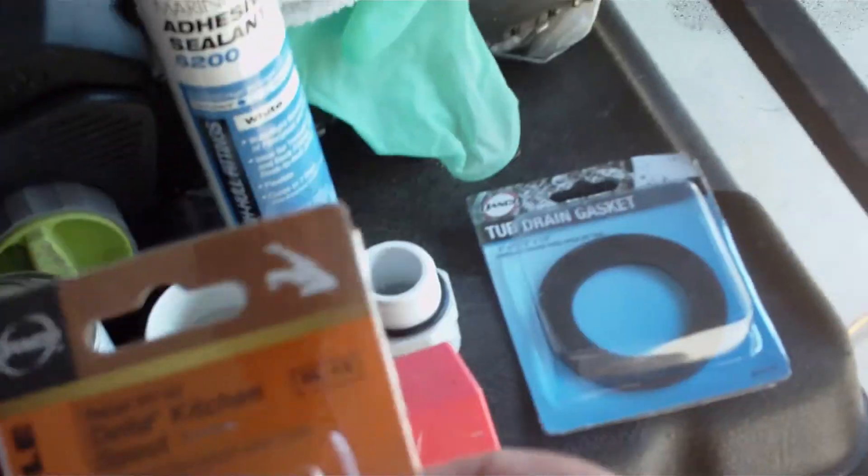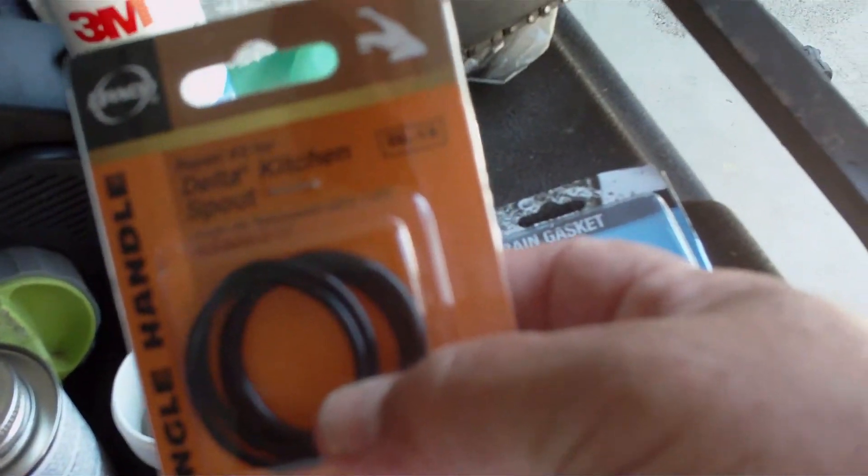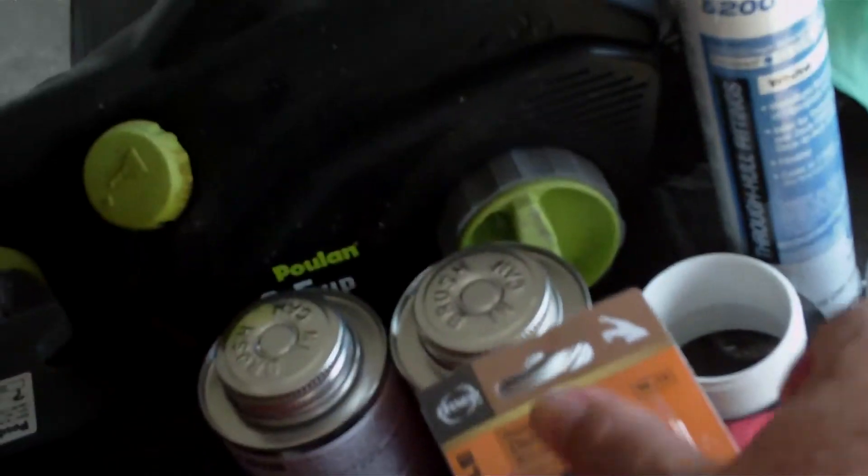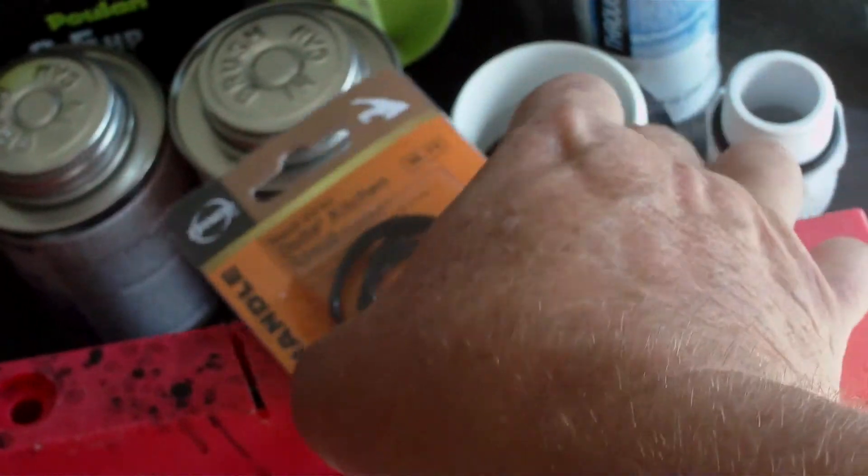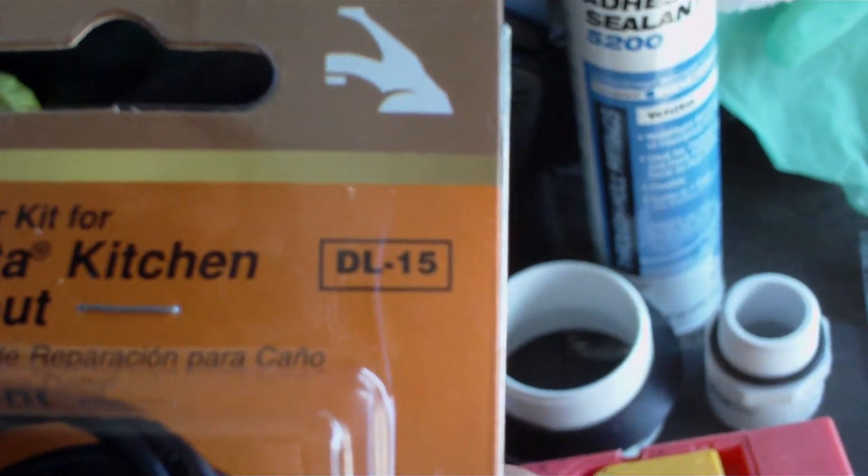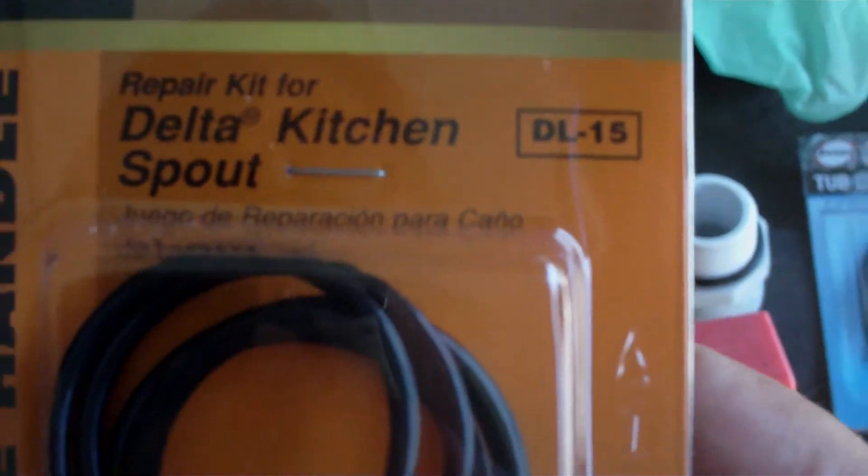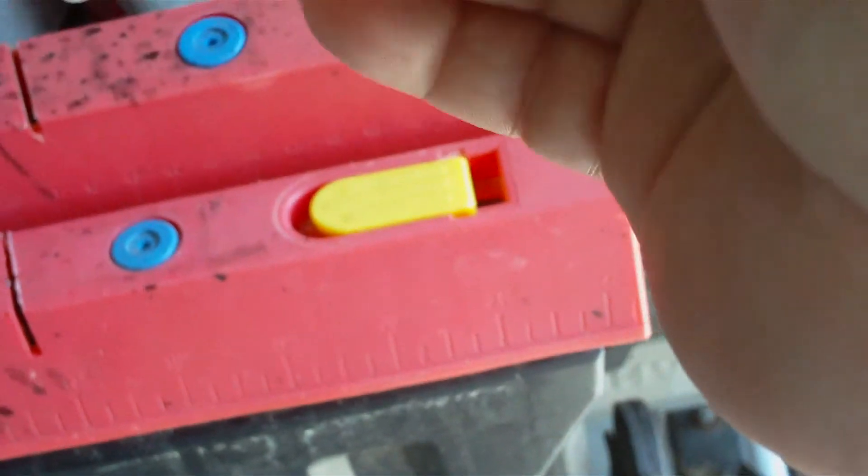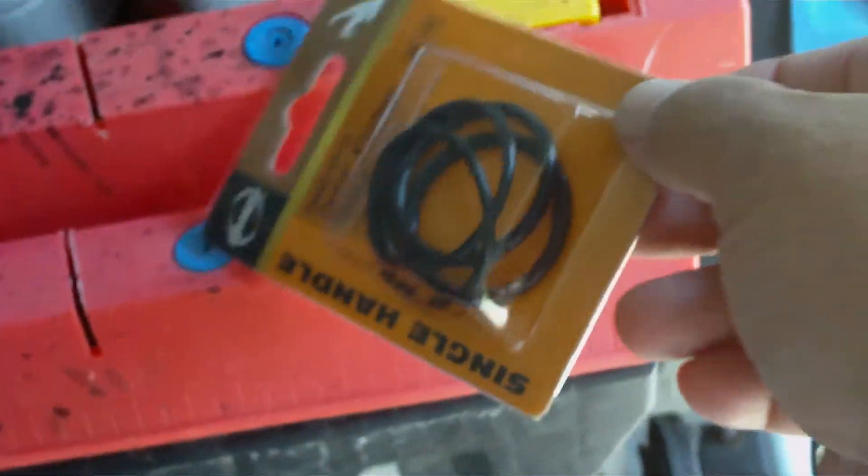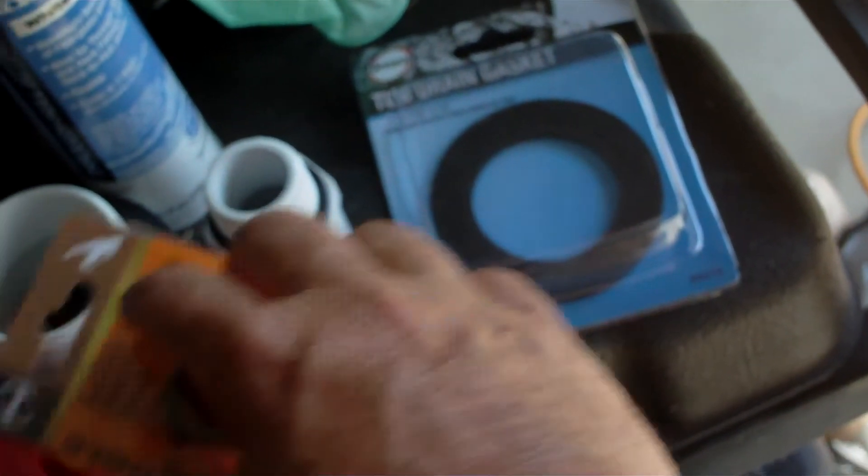If you go to Home Depot, not Lowe's, you can get this kit. Let me switch the camera over to the close-up. You can get this kit here, which is called the DL-15 from Danco. It's made for Delta Kitchen spouts. It comes with six O-rings. Three of them are thick, three of them are thin. The thin ones are not going to fit properly, so you need to use the thick ones. All I had to do was grab two of these packs for my six drains and I was good to go.